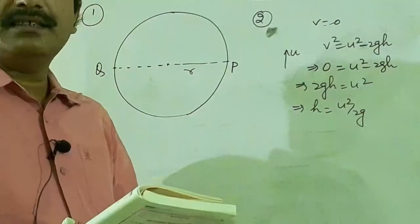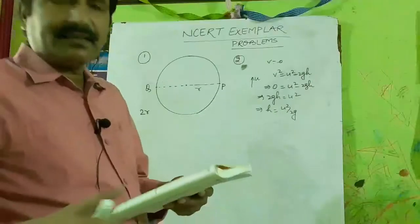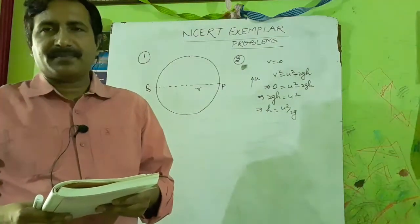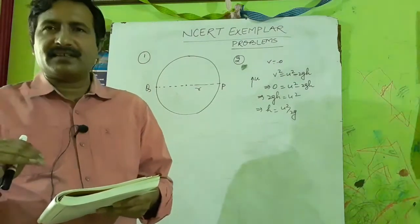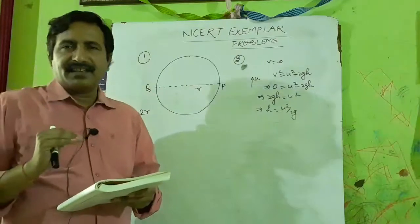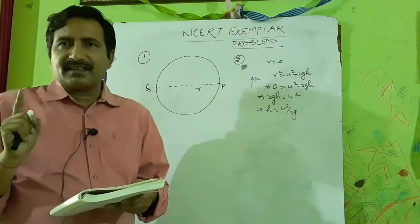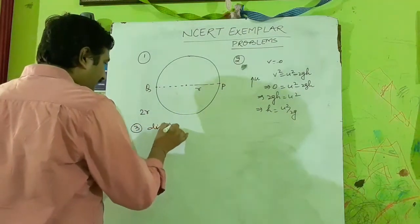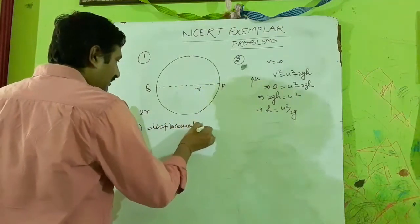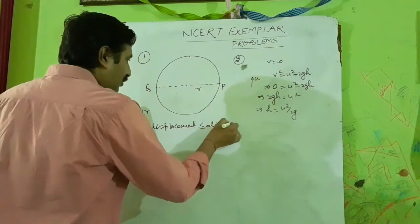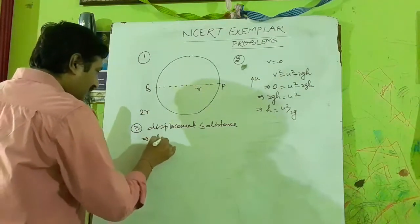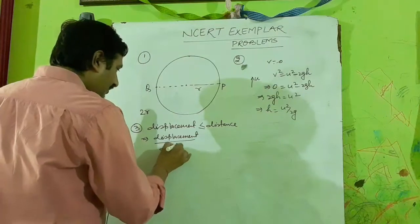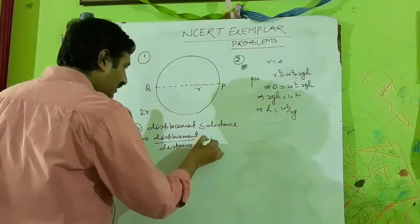Question three: The numerical ratio of displacement to distance for a moving object. Displacement is always less than or equal to distance, so displacement divided by distance will be less than or equal to 1.